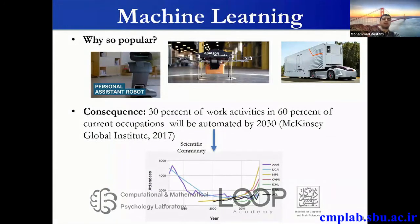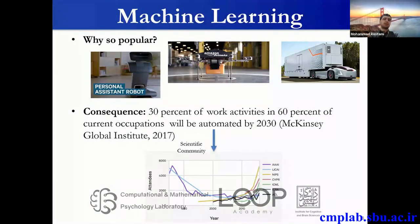You have personal assistant robots available to purchase on the market. Amazon kicked off its first drone delivery system recently, and autonomous trucks are being tested at the moment. According to a study by McKinsey Global Institute, by 2030 about 30% of work activities and 60% of current occupations are going to be automated. This is going to be quite consequential, and as a result we are seeing tremendous interest in the scientific community towards machine learning.